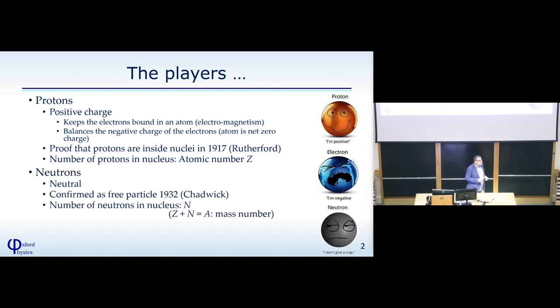The other big player is the neutron. Neutron, as it says in the name, is electrically neutral. It took us much longer to understand the existence of the neutron, and it was confirmed in 1932 as a free particle by a British physicist, Chadwick. We use a letter to count the number of neutrons in the nucleus. We call this N, and they both together are what we call the mass number, and we write this with the letter A.